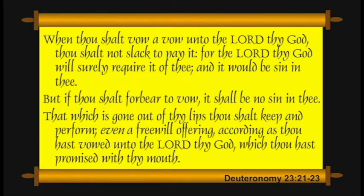'That which is gone out of thy lips, thou shalt keep and perform, even a free will offering according as thou hast vowed unto the Lord thy God which thou hast promised with thy mouth.' This concept underlies the peculiar episode in the early chapters of Acts with Ananias and Sapphira. It wasn't their withholding some goods from the communal situation that was the sin — it was their lying about it, which caused them to be killed on the spot before Peter.